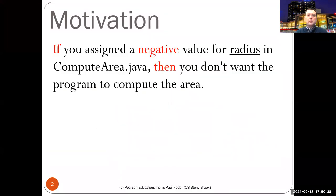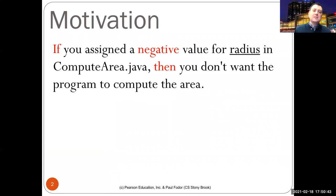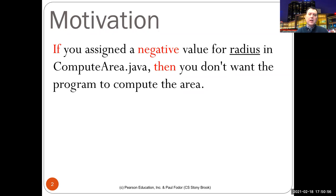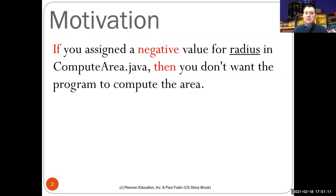We start with the motivating problem: the compute area math class we wrote for elementary programming, where the user enters a radius and we compute the area of a circle. However, if the user enters a negative radius, it's a valid integer read by a scanner, but it's not a positive integer. It doesn't make sense to print that the area of a circle with radius minus one is pi — there are no circles with negative areas.